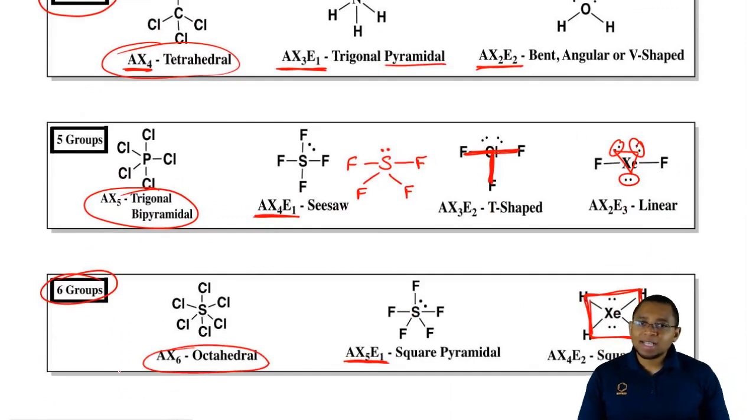I would recommend just memorizing this page here because that way you can take out molecular geometry and electronic geometry all at the same time, but remember there's a distinction. Electronic geometry treats lone pairs and surrounding elements as the same, as just X. Molecular treats them as different. We have X for surrounding elements and we have E for lone pairs.